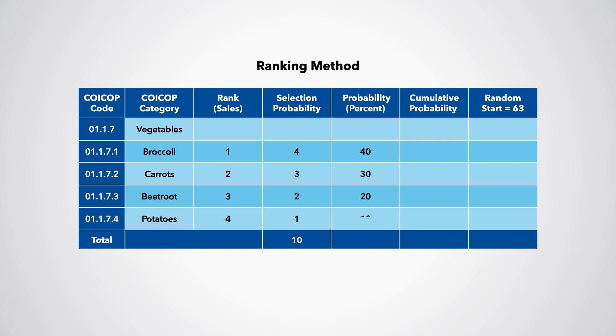The probability or percent and the cumulative probability are calculated. If we select one item, a random number between 1 and 100 is generated. If 63 were our random number, then we would select carrots.